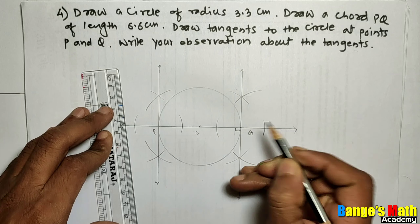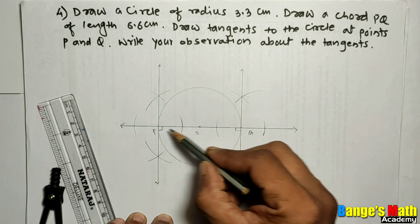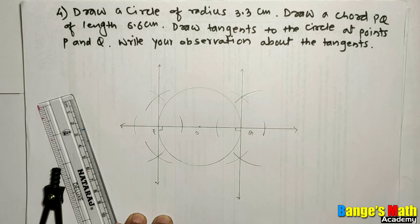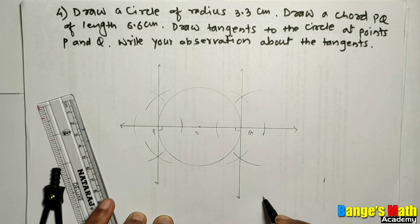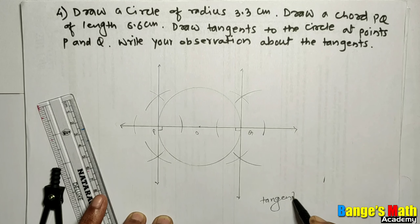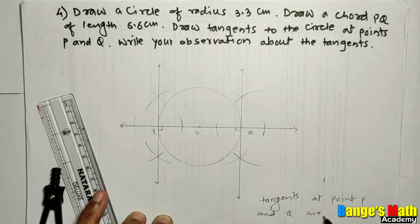The radius is perpendicular to the tangent. So, OQ is perpendicular to this tangent and OP is perpendicular to this tangent. So, these two tangents are parallel tangents. Tangents to the circle at points P and Q are parallel tangents. We can write: tangents at points P and Q are parallel to each other.